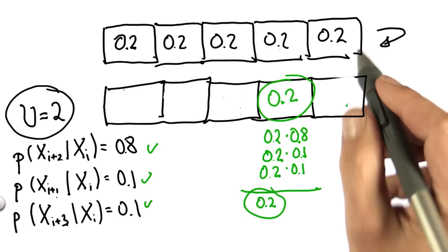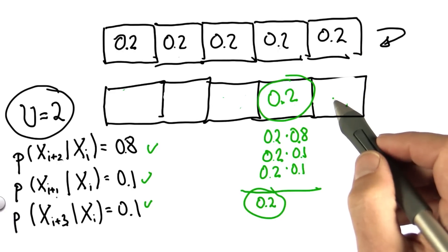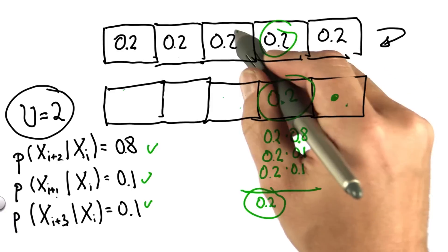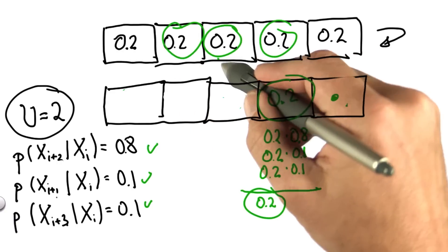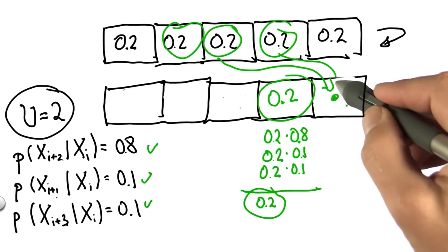You can apply the same logic to all the other cells. This guy over here could have come from this guy, this guy, this guy, where this one is rated with 0.8 and the other two with 0.1.